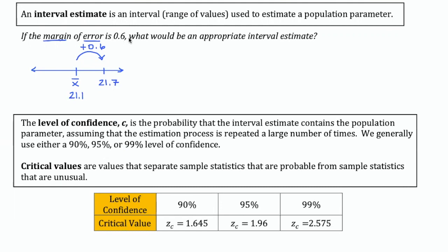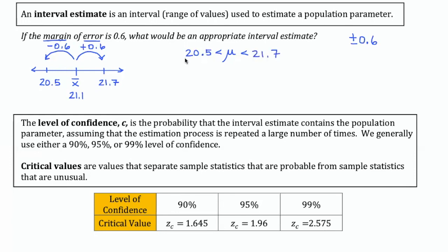But that margin of error applies both ways. You'll usually hear margins of error expressed as plus or minus a certain amount. Not only can you be 0.6 units above your sample mean, the population mean might also be 0.6 units below. So if you subtract 0.6 from 21.1, you get 20.5. My actual population mean has an interval estimate that it will be somewhere between 20.5 and 21.7, which is usually a more realistic picture than just the point estimate.